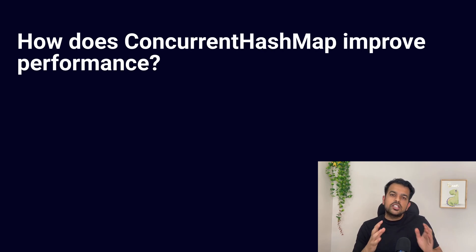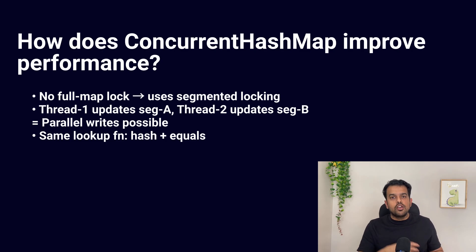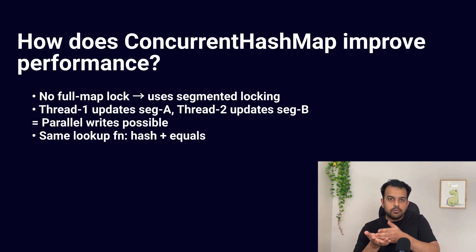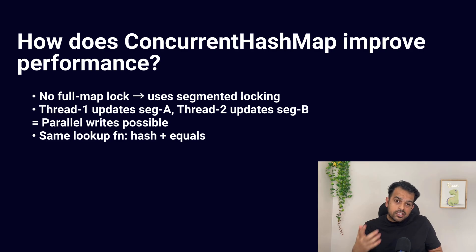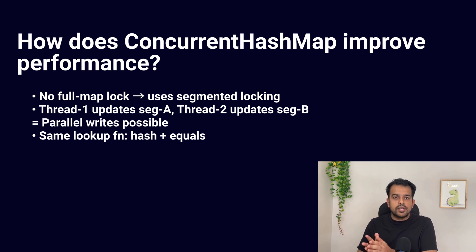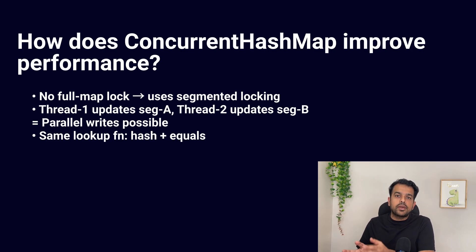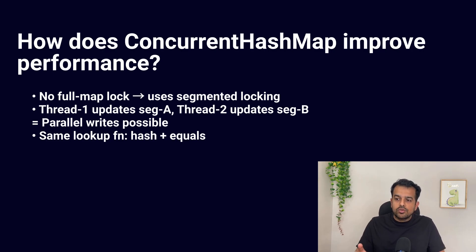The next question: how does ConcurrentHashMap improve performance? In a normal map, if many threads update data at once the whole map can get locked, making others wait. ConcurrentHashMap avoids this by splitting the map into multiple internal segments, and each segment can be locked independently. So if Thread 1 updates segment A, Thread 2 can update segment B at the same time without blocking each other. It still uses equals() to verify keys in a bucket if a collision happens, but the lock is on the segment, not the full map. The practical summary: it improves performance by allowing parallel reads and parallel updates on different internal sections safely.